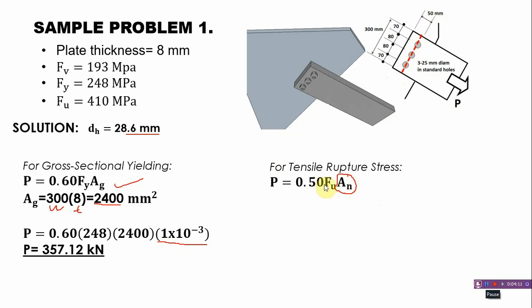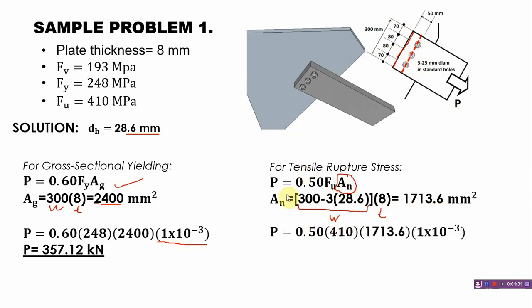We need to solve for our net area: 300 minus 3 bolts times 28.6, times thickness of 8 = 1713.6 square millimeters. Substituting: 0.50 × 410 × 1713.6 × 10^-3, we have P = 351.288 kilonewtons. That's for our tensile rupture stress.